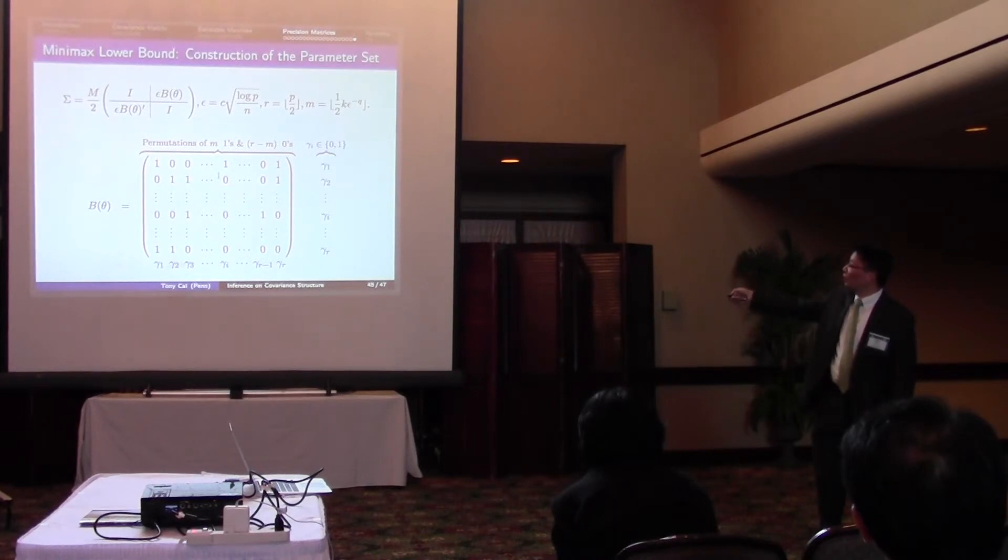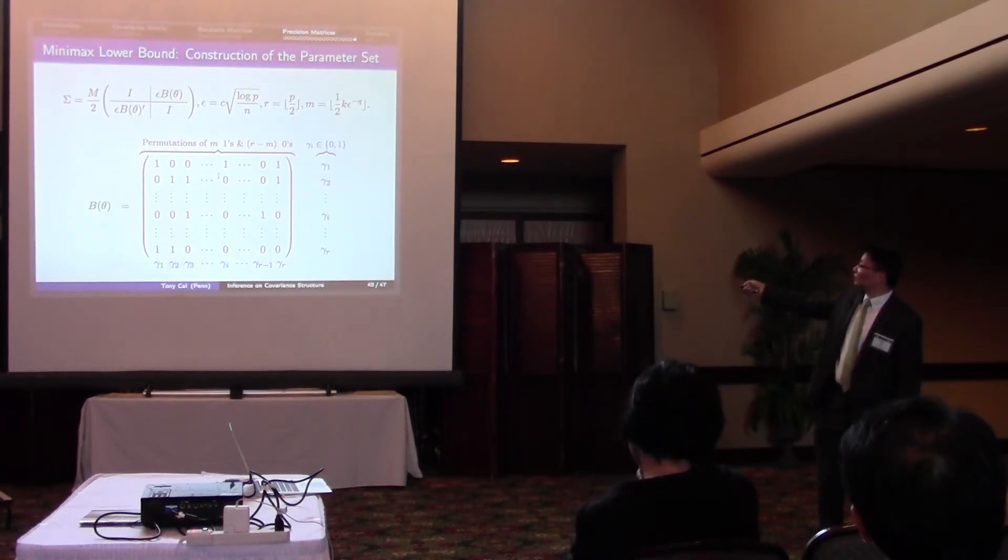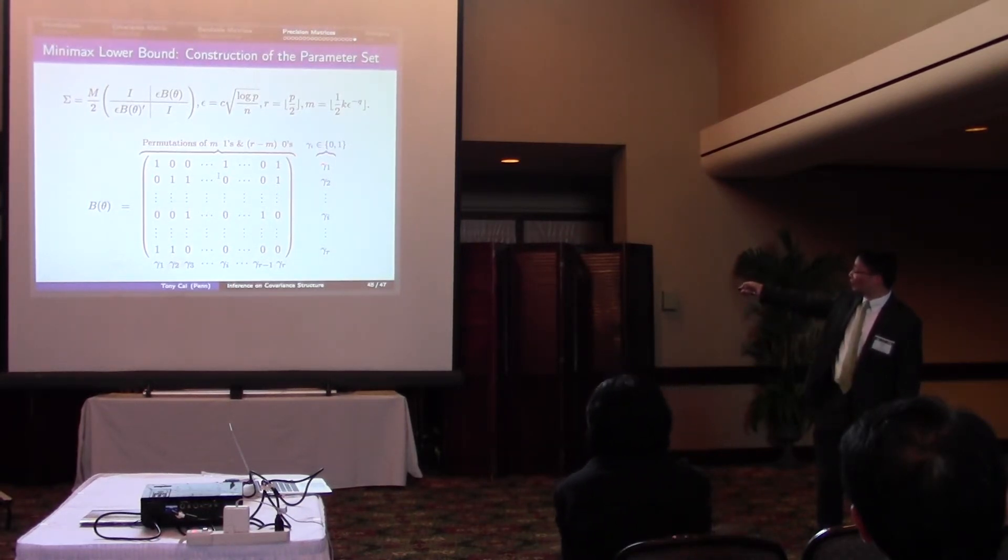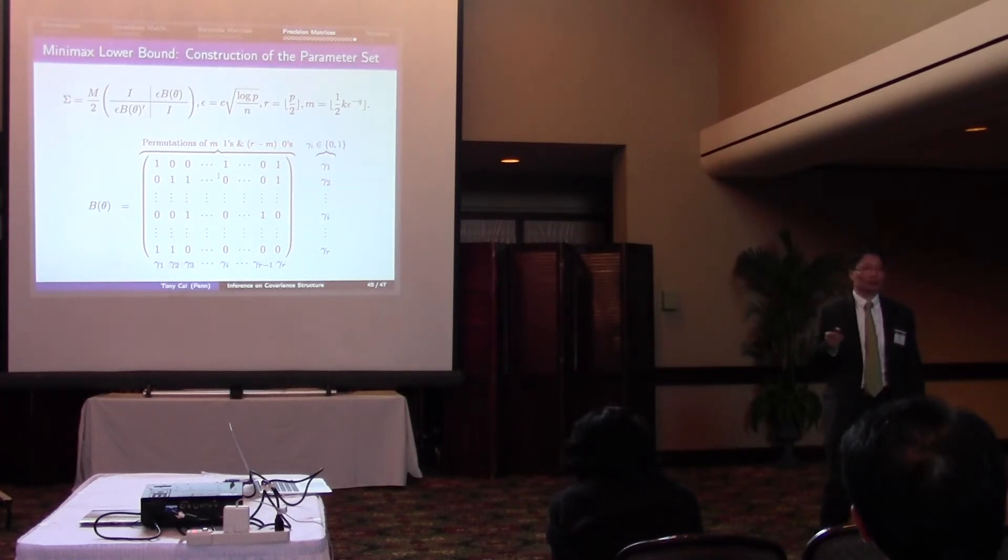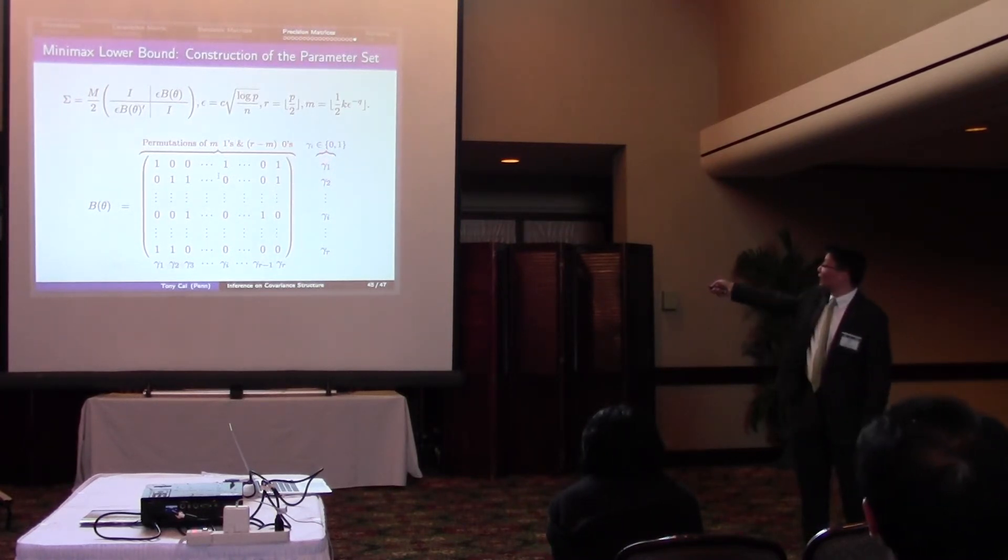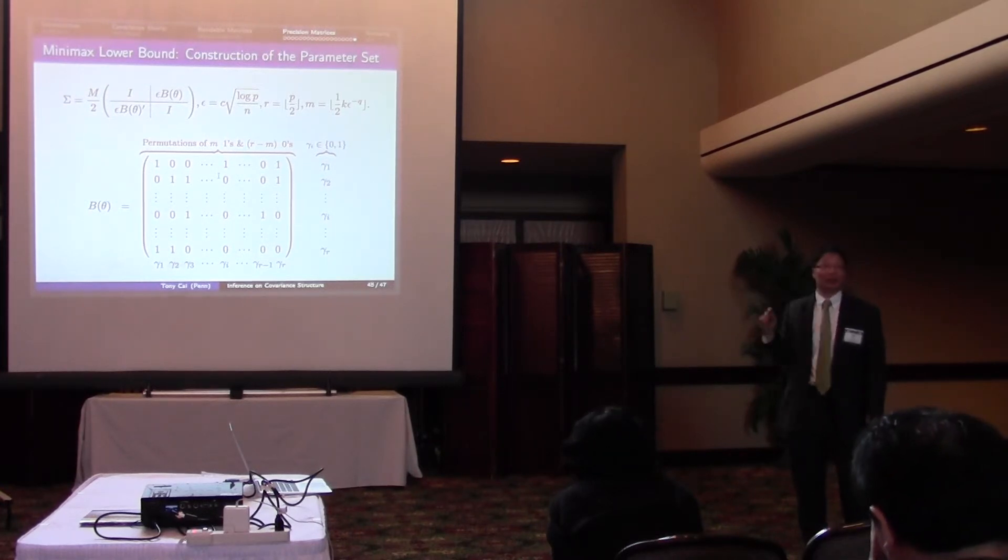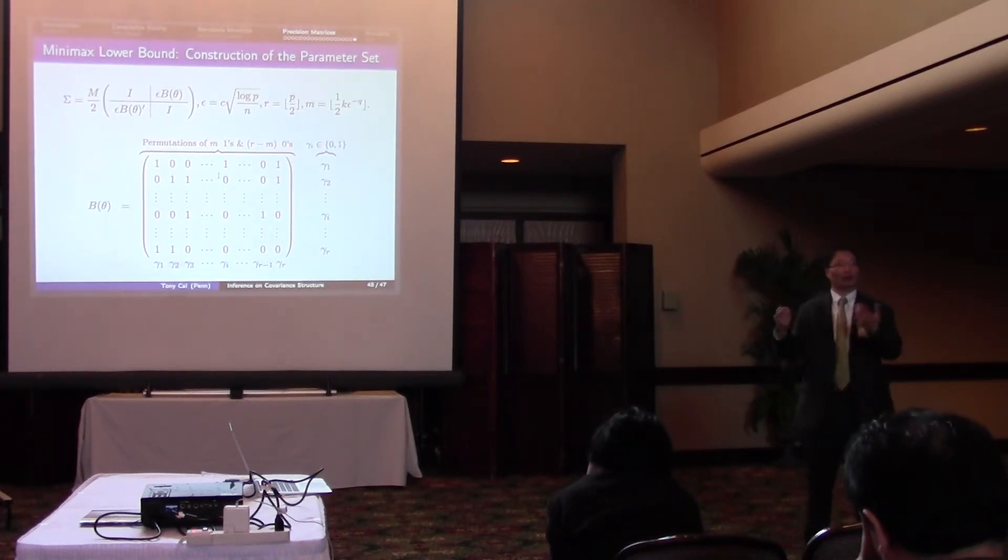And then you mix over all possible locations for those 1s, for these non-zero elements. And not only that, for each row and each column, you attach a Bernoulli variable, 0 or 1. If it's 0, it means the whole row is 0. Otherwise, it's one of those sparse vectors.